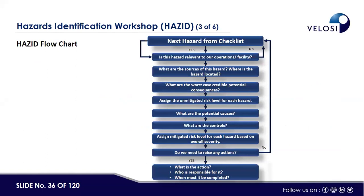This flow chart explains the HAZID workshop process for hazard identification. First, we determine if the hazard is relevant to the project or facility. If so, we identify the sources and location of the hazard, then identify the worst-case credible potential consequences, and assign an unmitigated risk level to each hazard. We then identify potential causes and control measures, and assign a mitigated risk level based on overall severity.